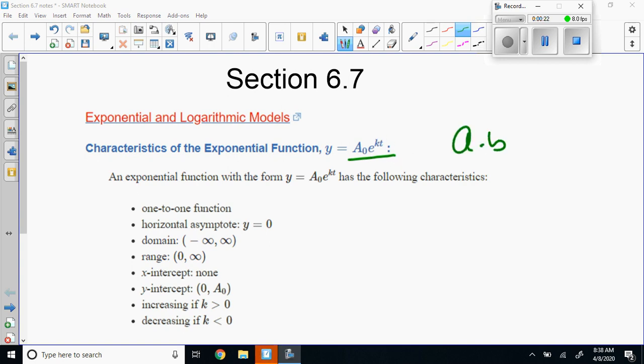Normally we would use a times b raised to the t for an exponential, but when you have e you're dealing with a continuous exponential as in such things as half-life and decay. Here's its characteristics: if k is greater than zero it's increasing, if k is less than zero it is decreasing or decay.